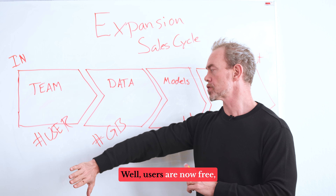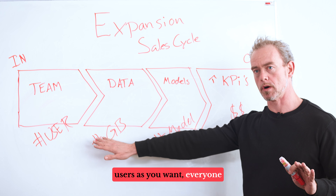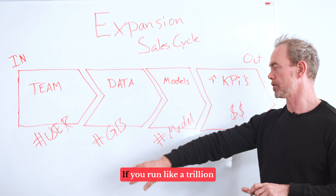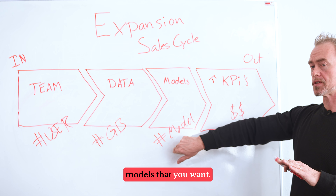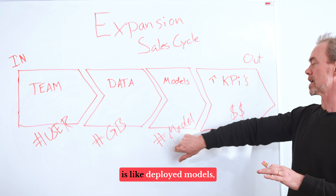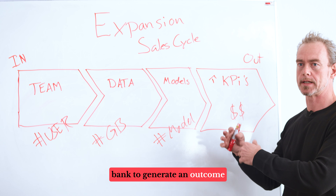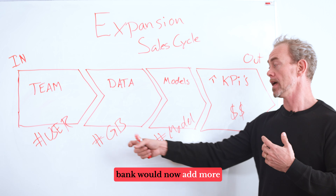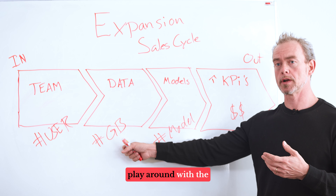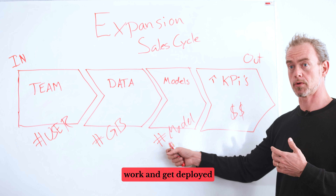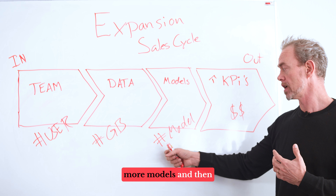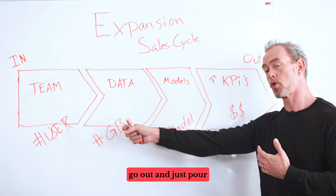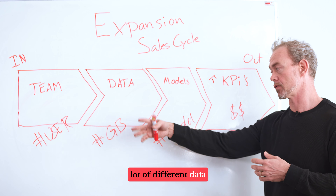What we did was make users free. You can add as many users as you want — everyone in the bank, a million users. You can run all the data you want; it runs in your infrastructure. You can train all the models you want. But we introduced a new definition: deployed models — models actually working in the bank to generate outcomes. Those we charge for. By charging for deployed models, the bank would now add more users: accountants, anybody. Everyone could play around with the data, get new ideas for models. Some of those models would work and get deployed much more quickly, and the deployed models would very quickly generate a return for the bank. Then the bank would pour in additional users because they were free, generate more data tables, and more models would be created.